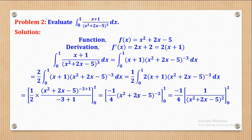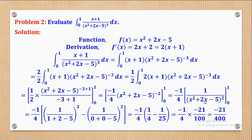Applying the rule of negative indices to make the power positive, we take it down to get negative 1 over 4 times 1 over (x² + 2x − 5)². Now substituting the limits: start with the upper limit, substitute x = 1 into the expression, then subtract the result with the lower limit x = 0. Using the calculator and simplifying, the definite integral evaluates to negative 21 over 400.